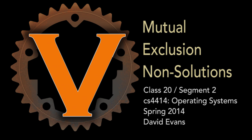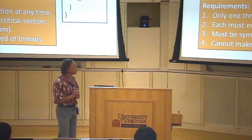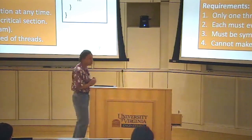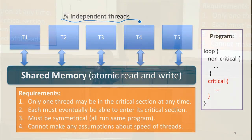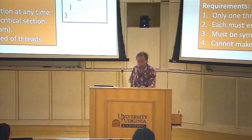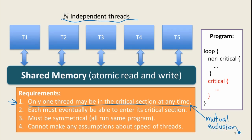This is the problem we started talking about last class, and this is the problem Dijkstra introduced in his paper. There have been lots of different solutions. We have some set of independent processes or threads, but they have some shared memory they can use to communicate, and no other ways to communicate. What we want is to figure out some way to guarantee the safety property — the mutual exclusion property — that says only one of them can be in the critical section.